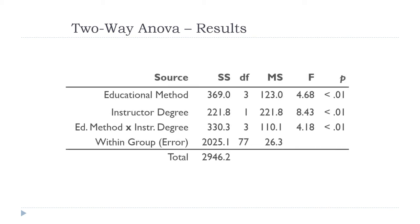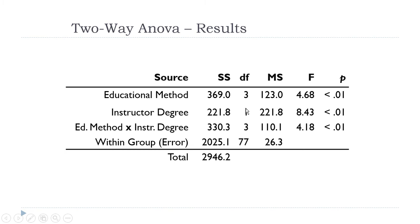Let's look at the results. There are going to be multiple between-subjects results. All three of these things are between-subjects results: the sum of squares for educational method, sum of squares for instructor degree, and the educational method by instructor degree interaction. All three are statistically significant. The degrees of freedom are three for educational method, one for instructor degree, and three for the interaction — because it's three times one. The error terms are shown just for comparison.